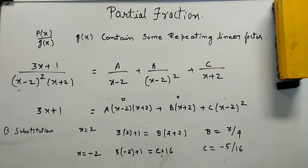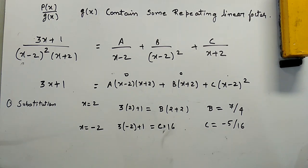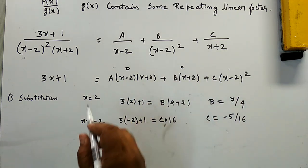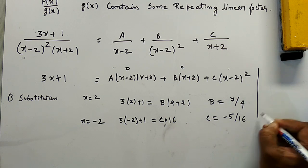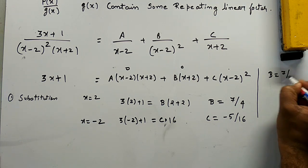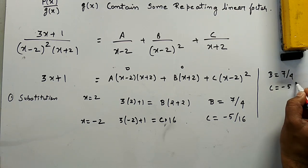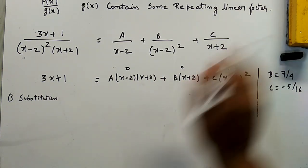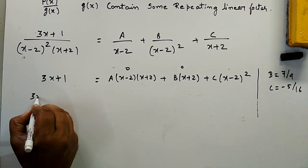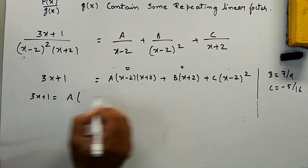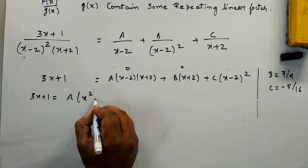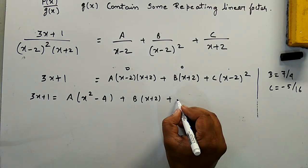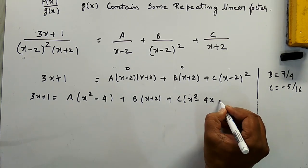Now we only need to find the value of A. For finding A, I am expanding this equation. Writing the values of B = 7/4 and C = -5/16, and expanding, I get: A·(x² - 4) + B·(x + 2) + C·(x² - 4x + 4).